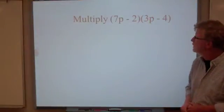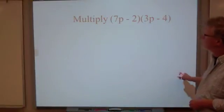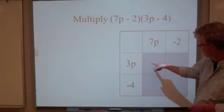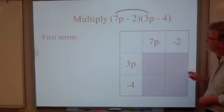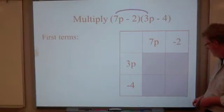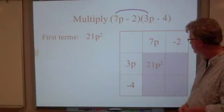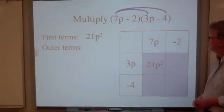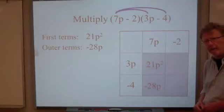Now, let's try this one. We've got 7p minus 2 and 3p minus 4. The product of which we're going to put it in this table. So the first thing we're going to do is fill up this cell. And that is like our first terms. It's within the FOIL. And so we end up with 21p squared. Next up is our outer terms. The 7p and the 4. 7p and negative 4 is going to be negative 28p.